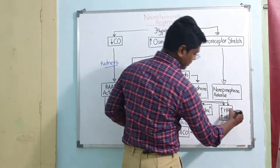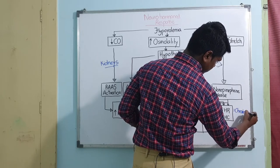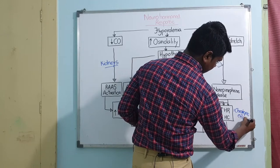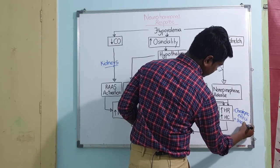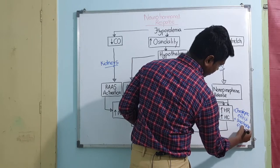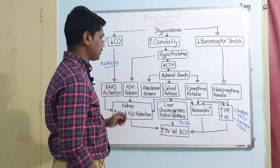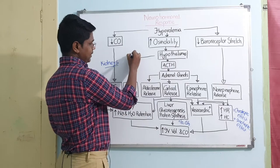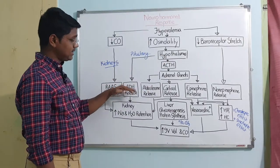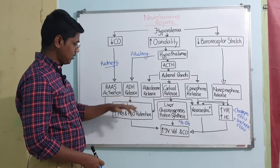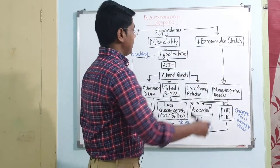Epinephrine is a potent vasoconstrictor causing vasoconstriction. It also has a positive chronotropic effect — meaning increase in heart rate — and a positive inotropic effect — meaning increase in myocardial contractility. So epinephrine has both chronotropic and inotropic effects, which further increase intravascular volume and cardiac output. The hypothalamus also controls the pituitary gland, and under the hypothalamus's command, the pituitary will release anti-diuretic hormone (ADH), which increases water and sodium retention, further increasing intravascular volume and cardiac output.